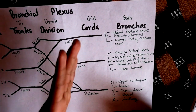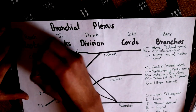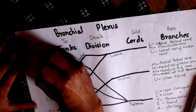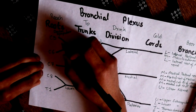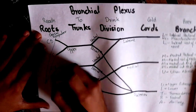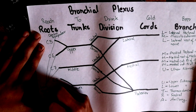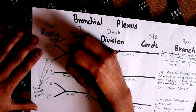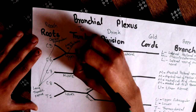There are some other branches with different origins. One branch arising from C5 is the dorsal scapular nerve. Another branch arising from C5, C6, and C7 is the long thoracic nerve. From the upper trunk, two nerves arise: the nerve to subclavius and the suprascapular nerve.